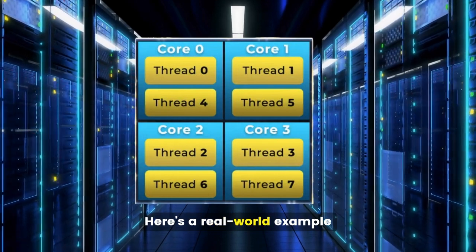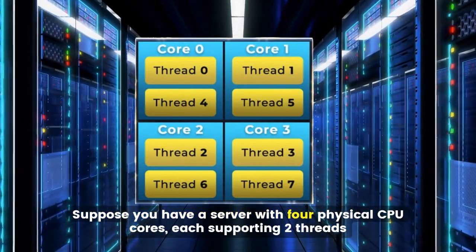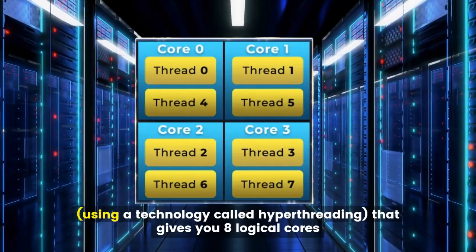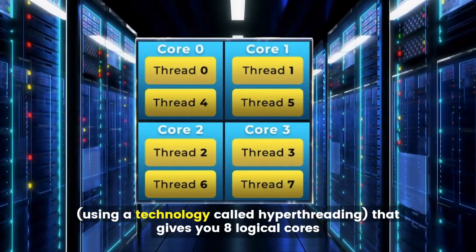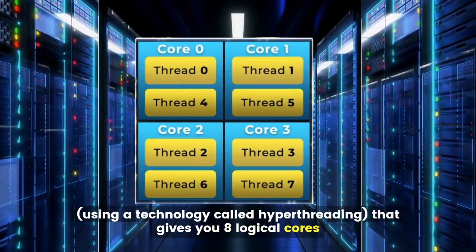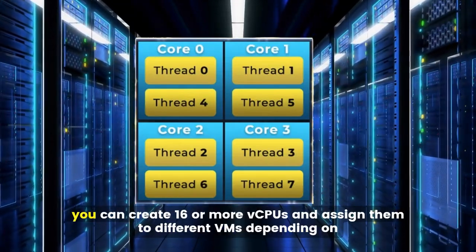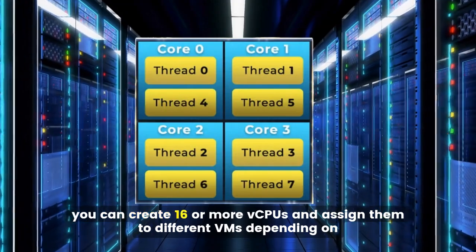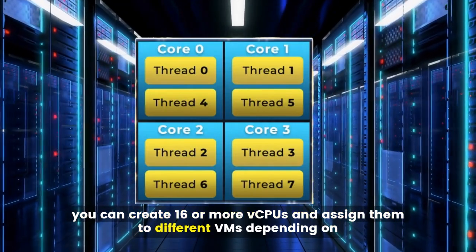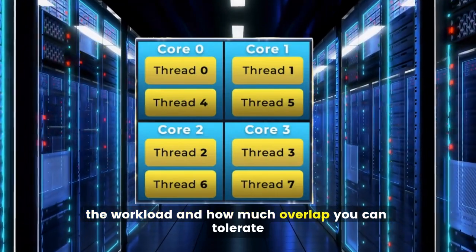Here's a real-world example. Suppose you have a server with four physical CPU cores, each supporting two threads, using a technology called hyperthreading. That gives you eight logical cores. With virtualization, you can create 16 or more vCPUs and assign them to different VMs, depending on the workload and how much overlap you can tolerate.